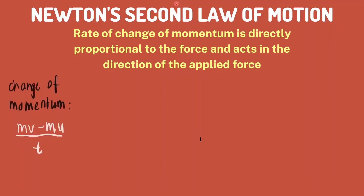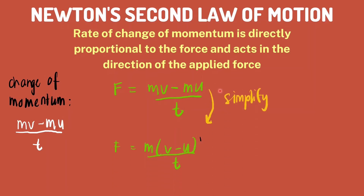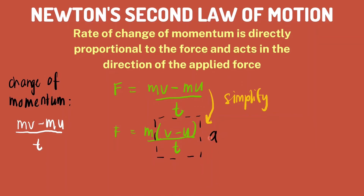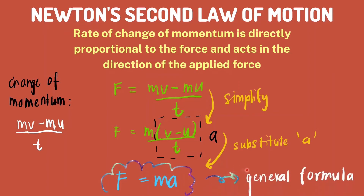The equation for change of momentum is mv minus mu over t, and the law states that force is directly proportional to this equation. As we can see, there are two m's, so we can simplify this equation. The simplified expression in the black box is actually the formula for acceleration, so we can substitute a into the equation and get F equals to ma. This would be the general formula we use for any questions relating to Newton's second law of motion.